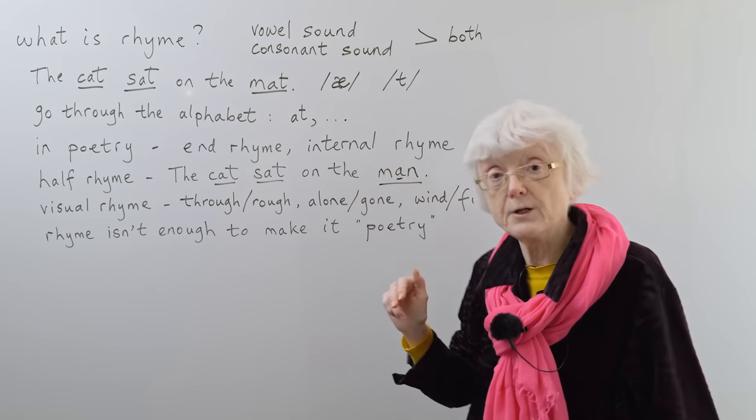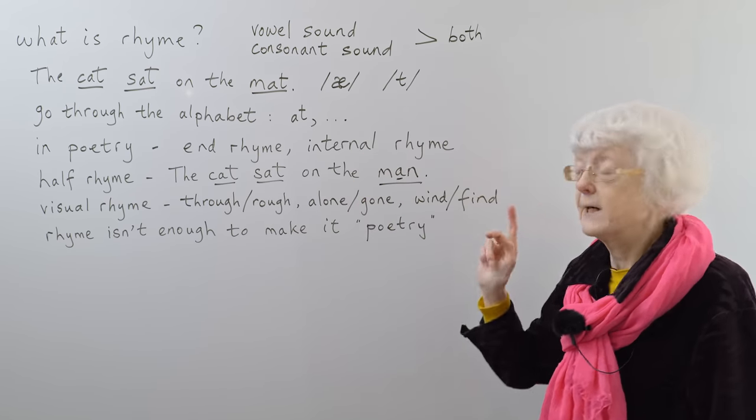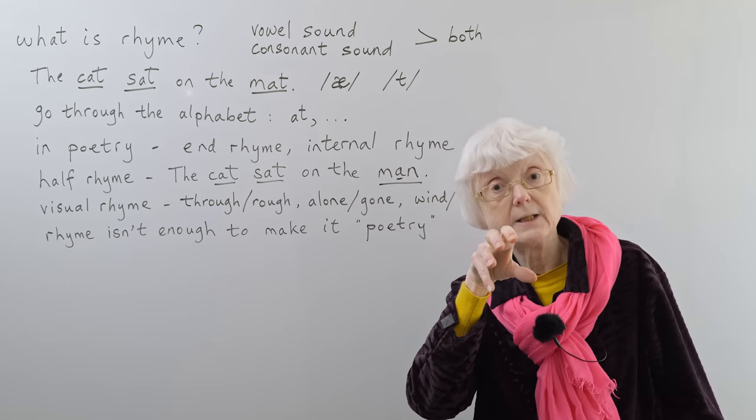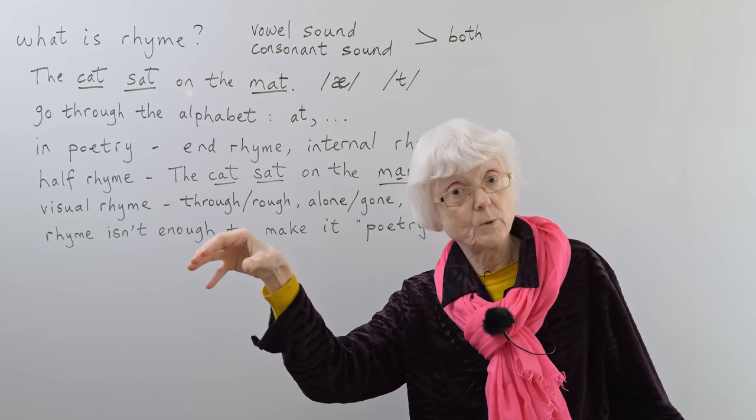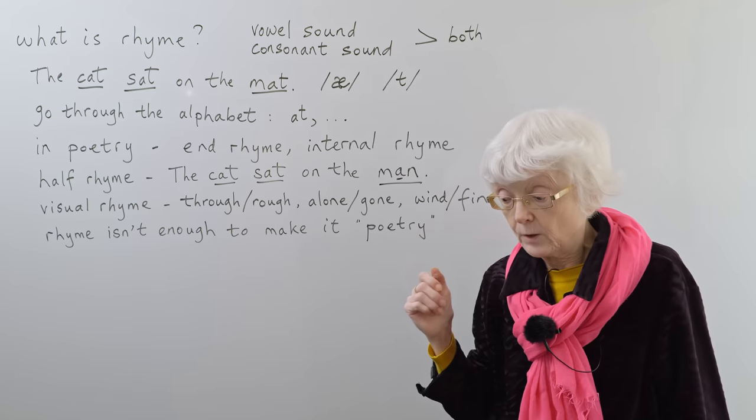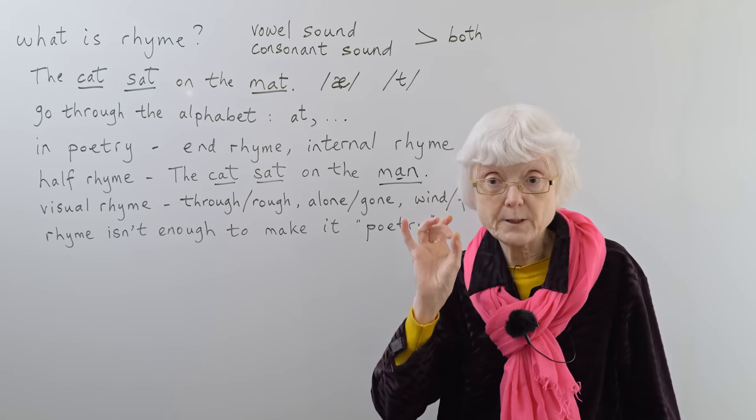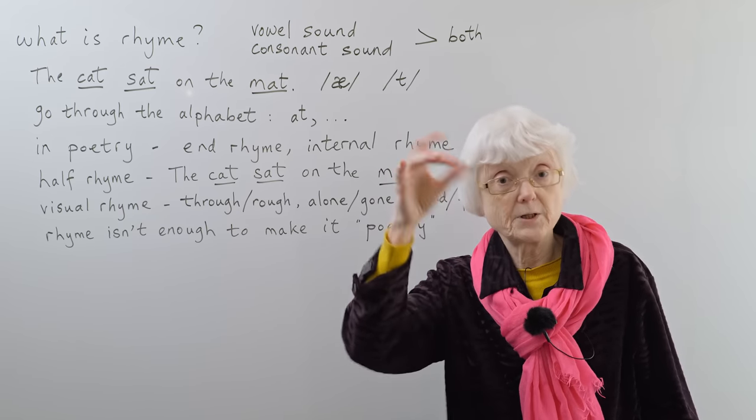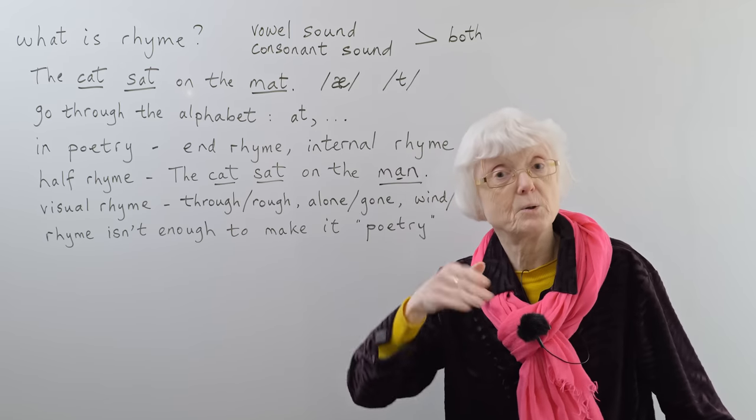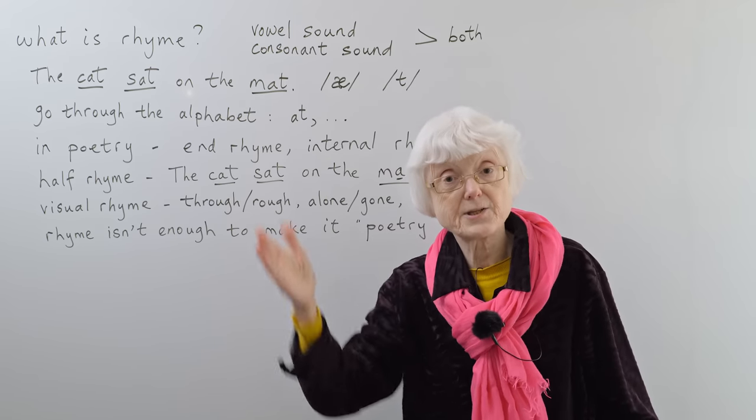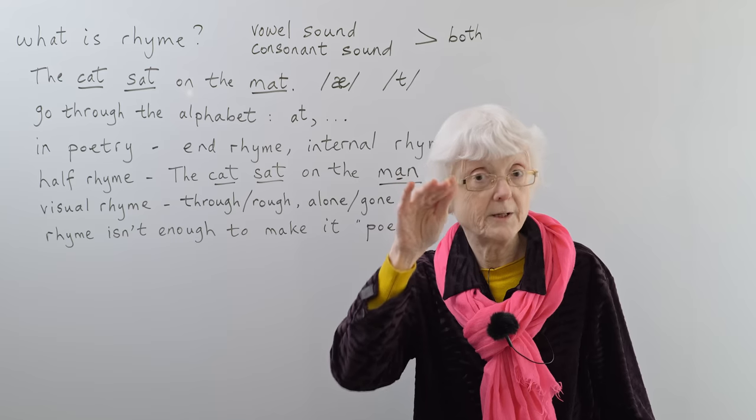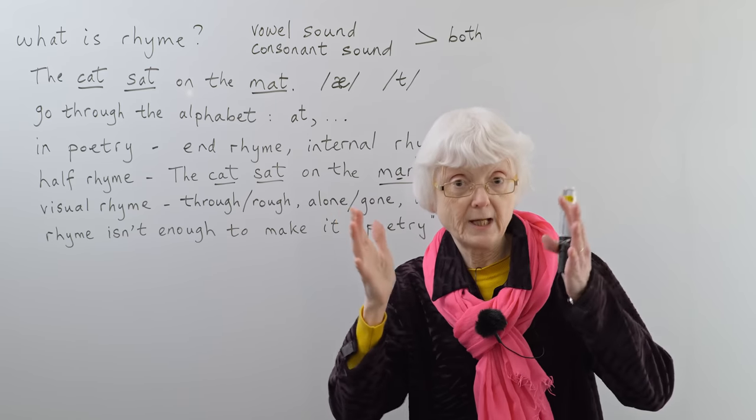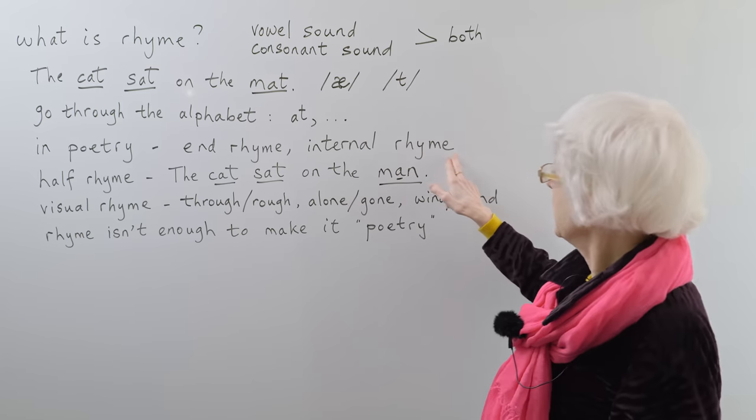It's called an end rhyme if it comes at the end of the line. You can also have internal rhyme. If you see a word maybe in the middle of the line, it might rhyme with the word at the end of the same line, or there may be a word in the middle of one line which rhymes with another word in the middle of another line. So don't just look at the ends of the lines for rhymes. You might find rhyming internally as well within the line.